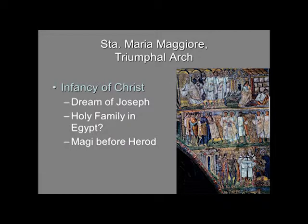On the opposite side, we see at the top the dream of Joseph that sends the family into Egypt, and this may be the Holy Family in Egypt. Down below, you see the magi before Herod, who is sending them out to find the Christ child under the pretense of paying homage. But of course we know that Herod the king is planning to kill the infant Christ child.